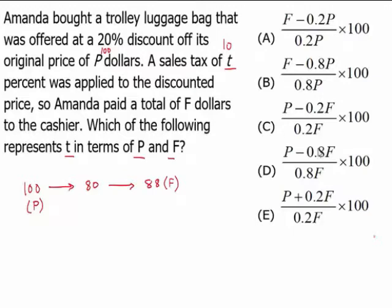Remember, each one of these expressions are supposed to be equal to T, which of the following represents T in terms of P and F. So this is like T is equal to, this is like T is equal to, and the same goes with all the other options. So we are going to plug in these numbers and check out which one is going to give us 10 for T.